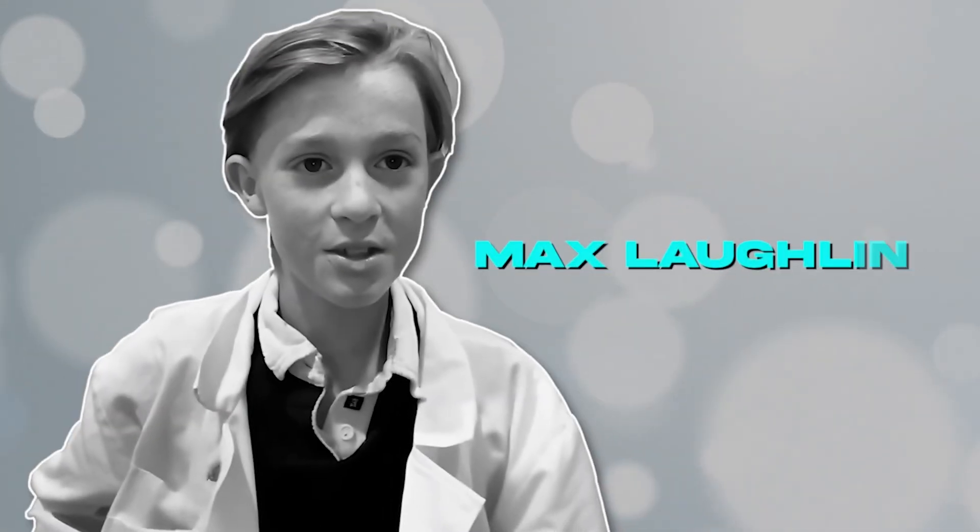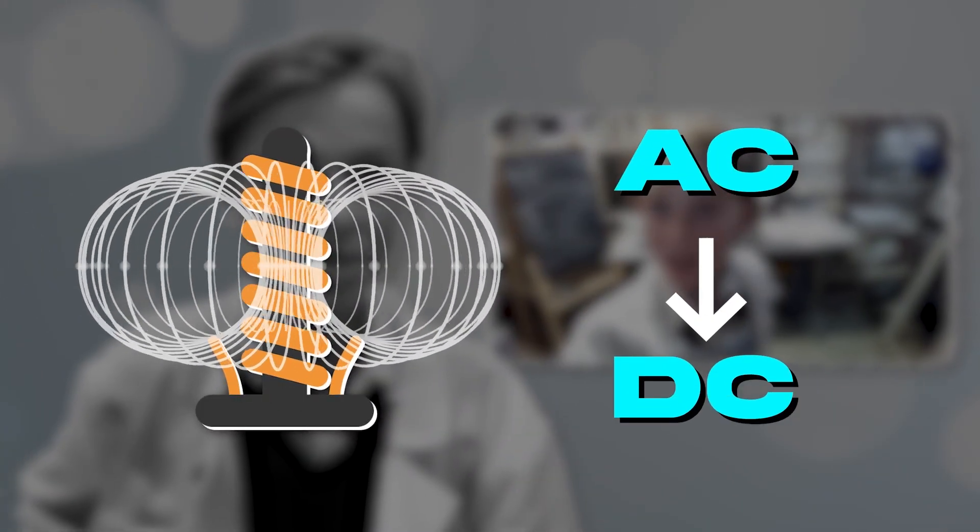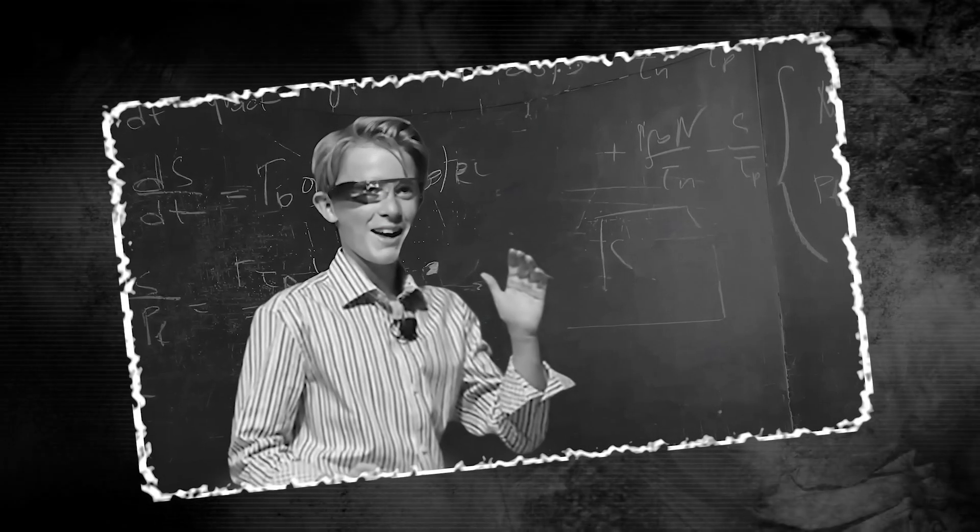Max Loughlin's story sounds like a movie. A gifted kid takes the stage with a huge idea. A wire pulls energy from the air. AC turned into DC right there. Mentions of Tesla. Name drops of Einstein. Big talk about CERN, then silence. He vanishes from the public eye just as fast as he rose.